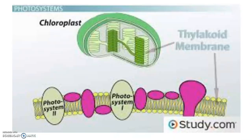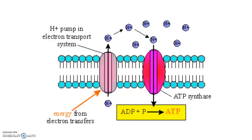Inside the thylakoid the light reactions take place. Light excites electrons which travel down the electron transport chain. Electrons pump hydrogen ions across the thylakoid membrane. ATP is made when hydrogens diffuse through ATP synthase.